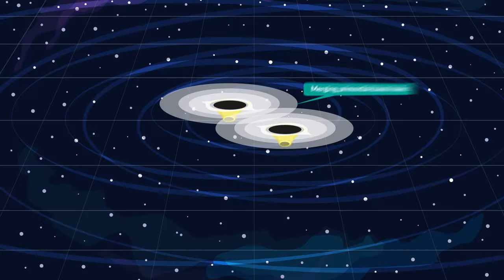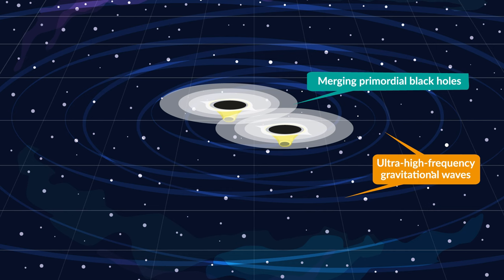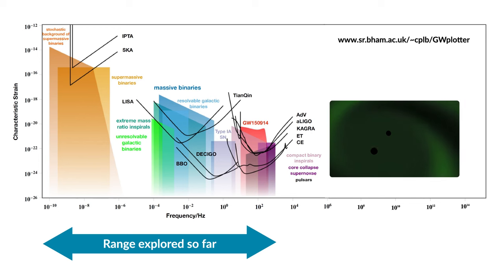The merger of these light black holes would produce ultra-high-frequency gravitational waves. Therefore, if we built detectors capable of discovering such a signal, we could get strong evidence that primordial black holes exist, potentially solving the mystery of dark matter.